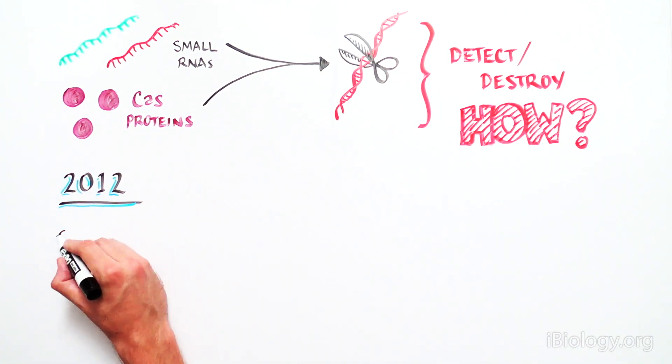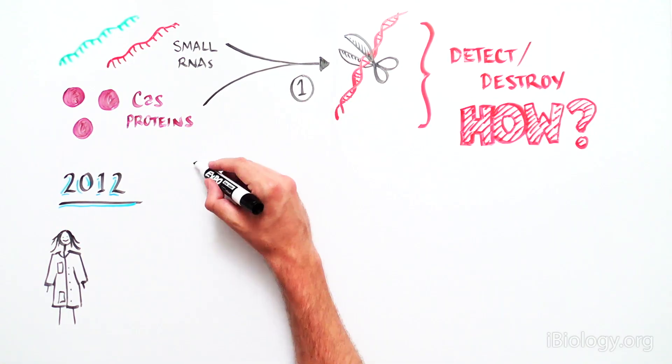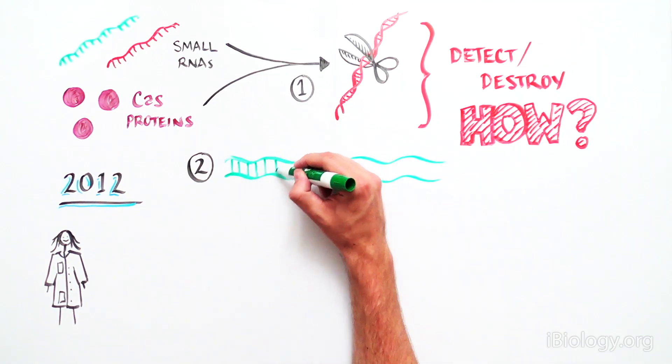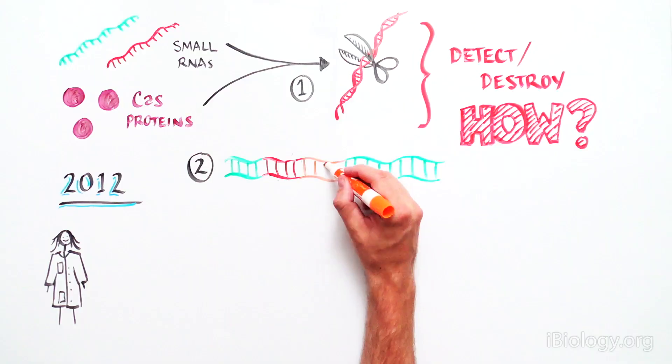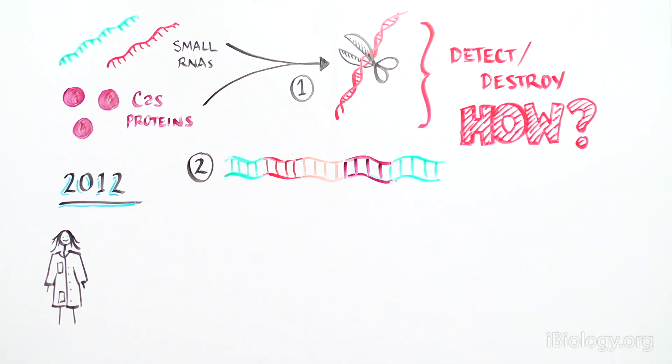In 2012, a group of scientists made a major breakthrough and discovered not only how the CRISPR RNAs and Cas cut DNA, but also how to create a new technique to specifically change the DNA sequence of any organism with great ease.